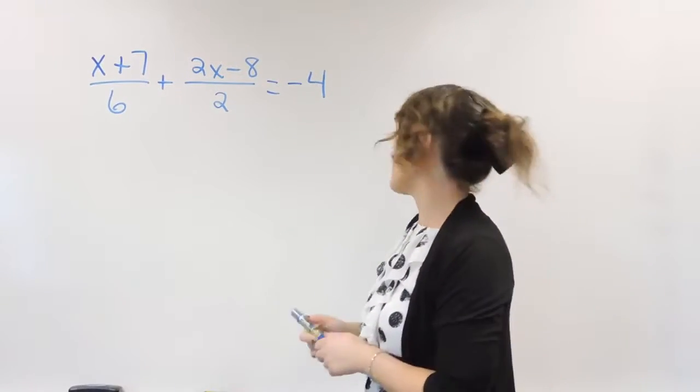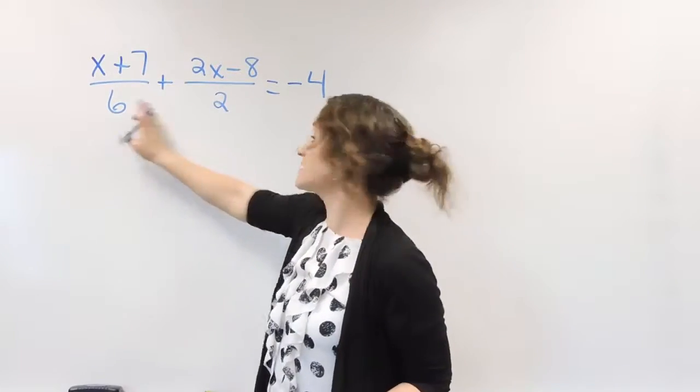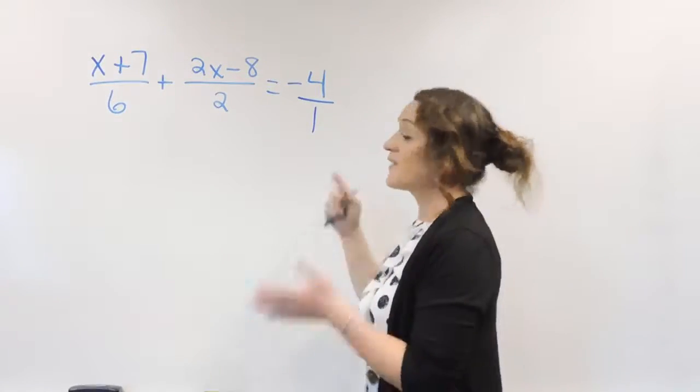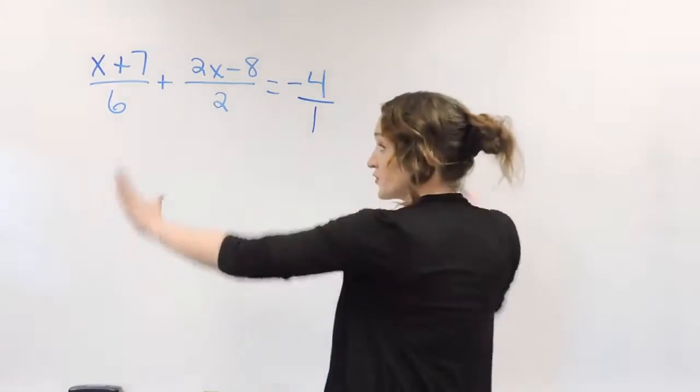So for this example that we have here, we have denominators of 6, 2, and technically a 1. And we need to find the common denominator of all three of these.